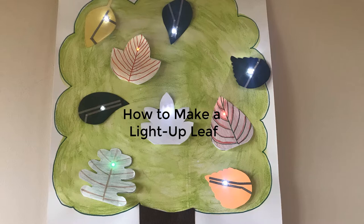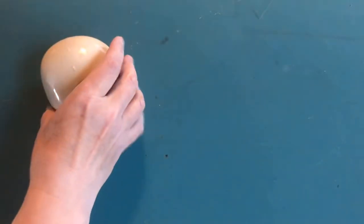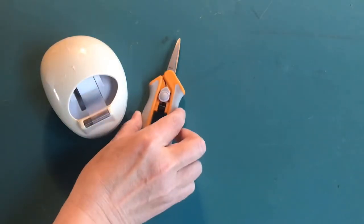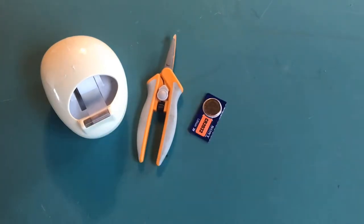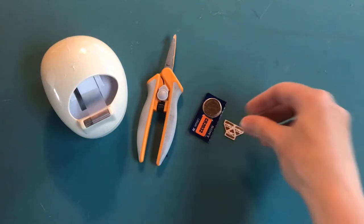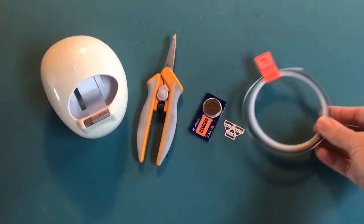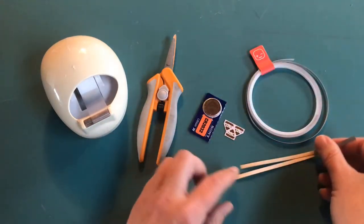Before we get started, you're going to need to gather a few supplies. You're going to need some tape, a pair of scissors, a coin cell battery, a circuit sticker LED, and some conductive fabric tape, which may or may not be cut into strips for you.